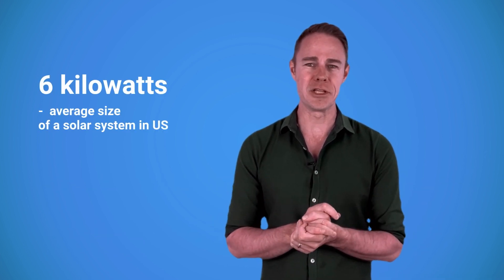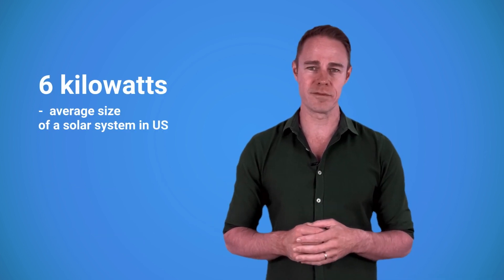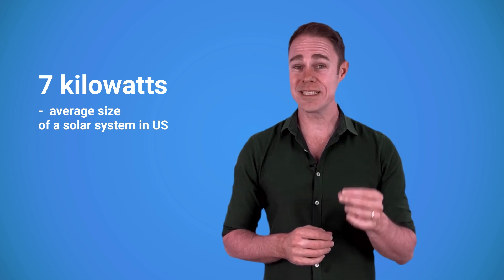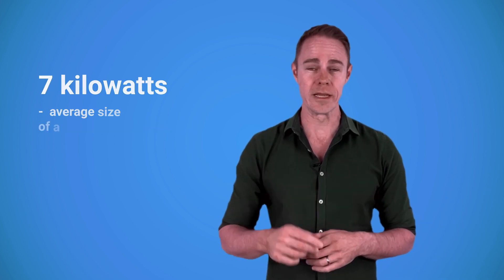The same goes for solar systems. If you have a 7 kilowatt solar system, on average it'll produce about 5 kilowatts of power. The average size of a solar system in the U.S. used to be 6 kilowatts a few years ago, but now it's about 7 kilowatts and growing.